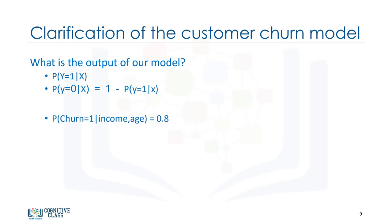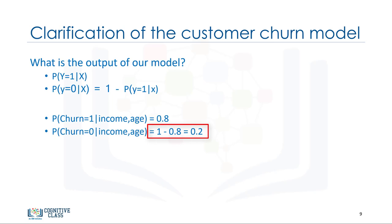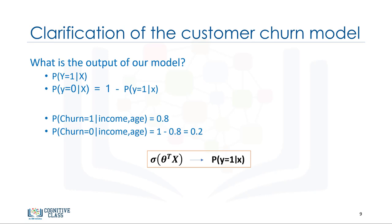For example, the probability of a customer churning can be shown as P(churn=1 | income, age), which can be 0.8. And the probability of churn equals 0 for the same customer, given their income and age, can be calculated as 1 minus 0.8, which equals 0.2. So our job is to train the model to set its parameter values such that it is a good estimate of P(y=1 | x). It should also be a good estimate of P(y=0 | x), shown as 1 minus sigmoid of theta transpose x.